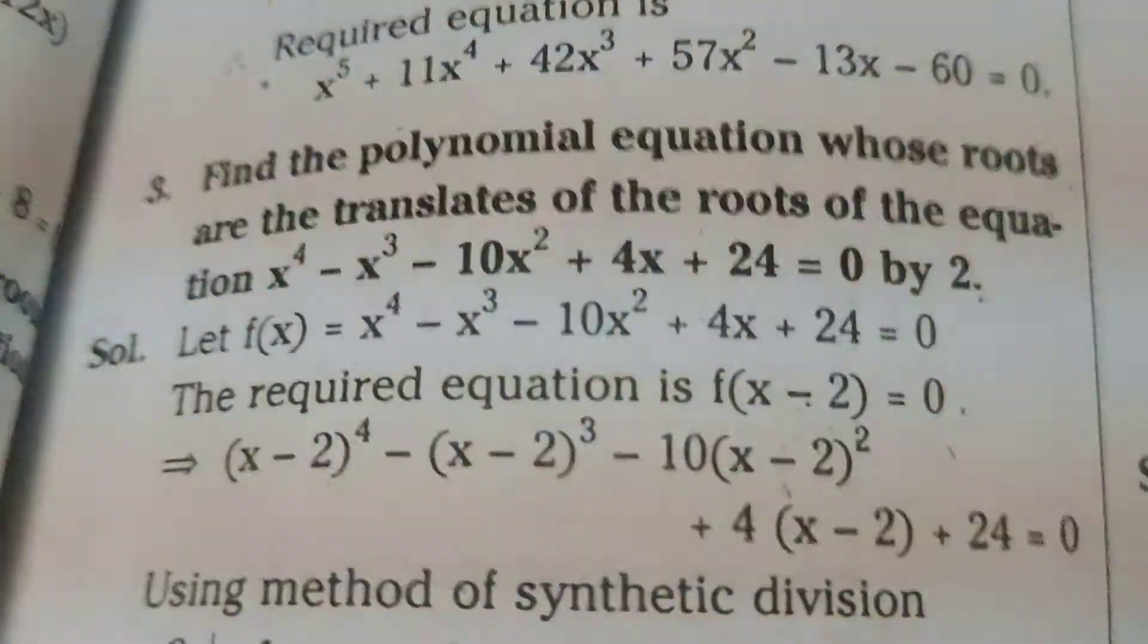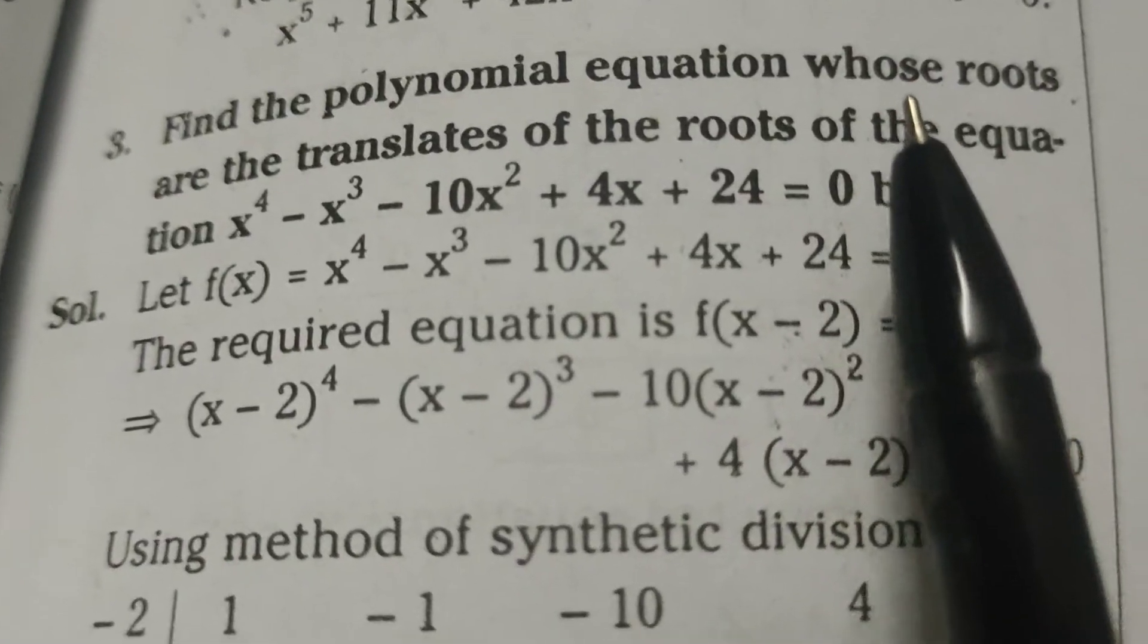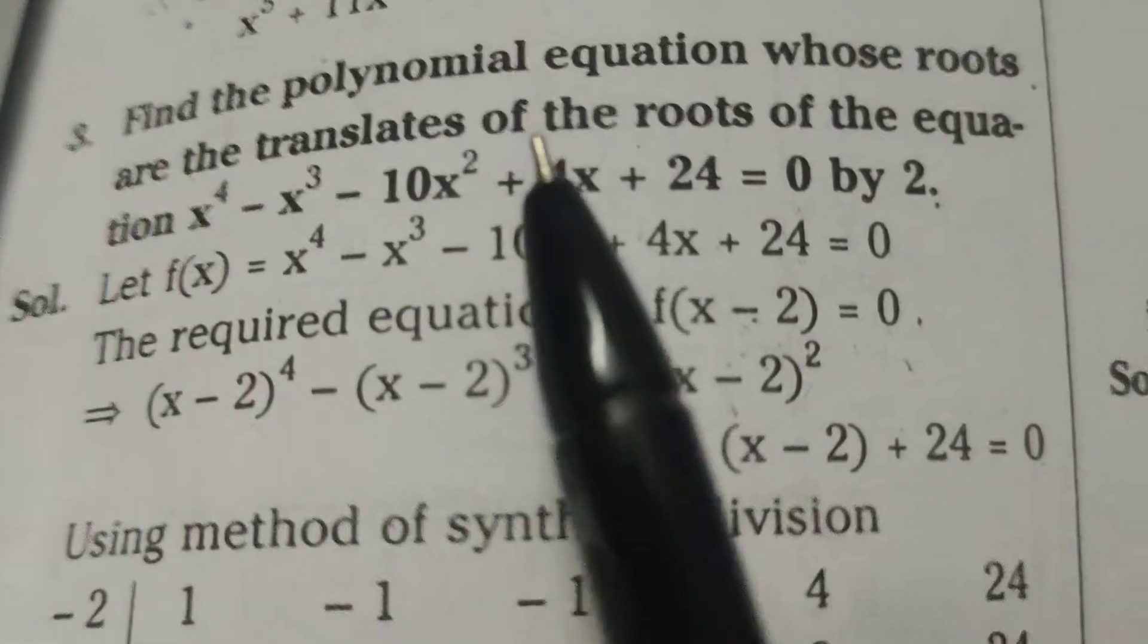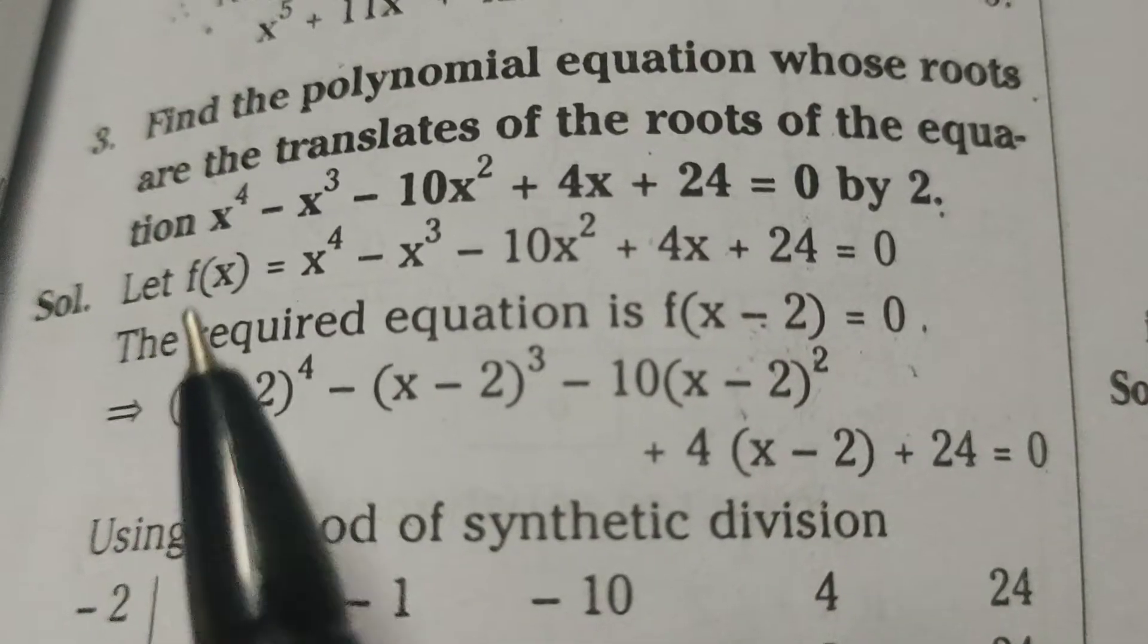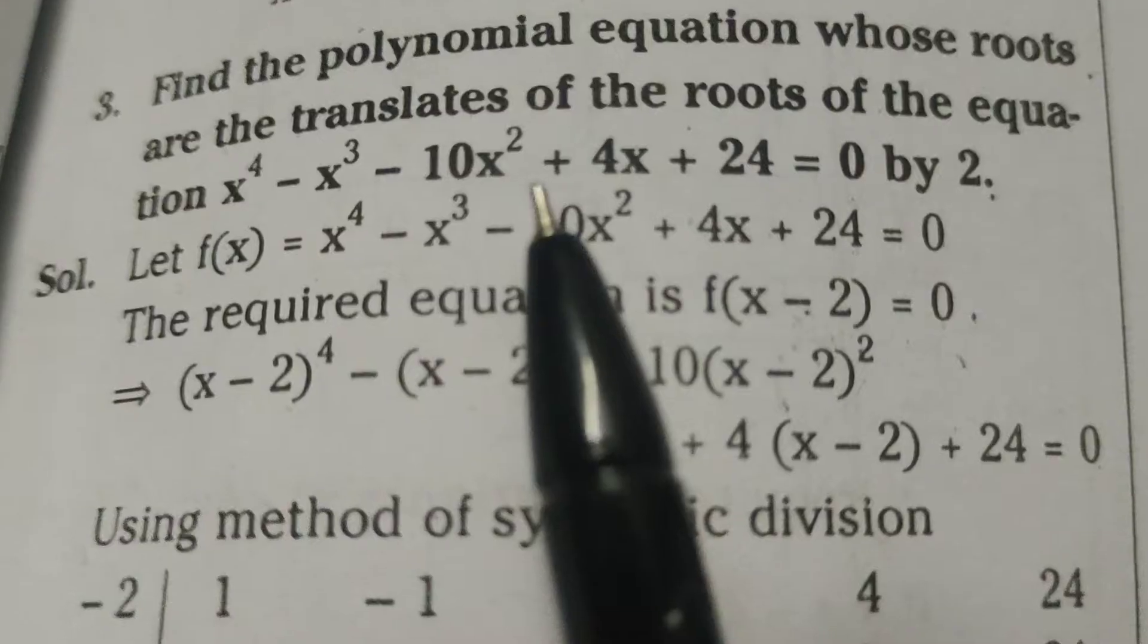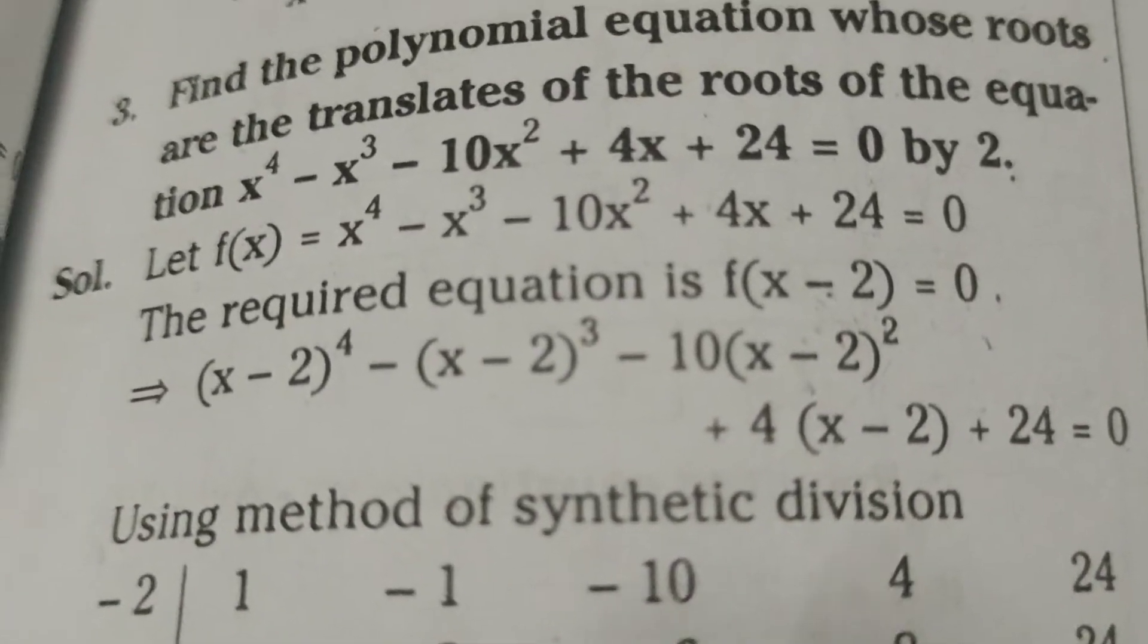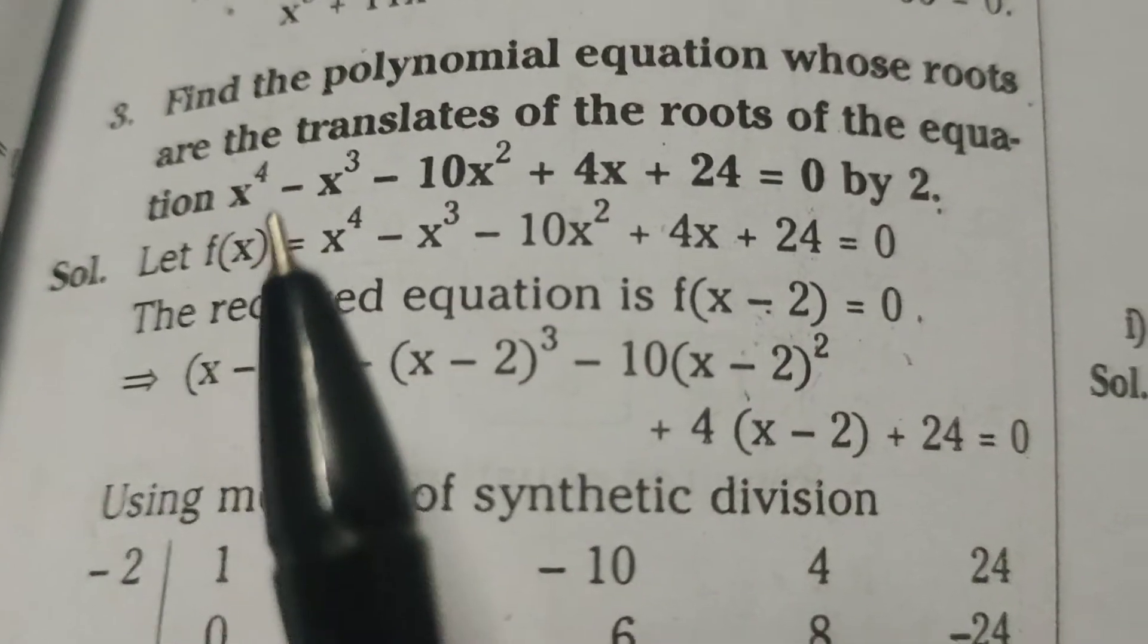Hi everyone, this is Dr. Aethi. Now today we are going to discuss finding the polynomial equation whose roots are the translates of the roots of the equation x^4 - x^3 - 10x^2 + 4x + 24 = 0 by 2.